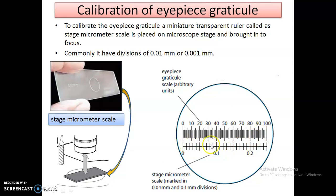From 0 to 40 on the eyepiece graticule should correspond to 0.1 mm on the stage micrometer. From 40 to 80 should correspond to 0.2 mm, and from 80 to 100 should correspond to 0.05 mm — combining all these gives a total of 0.25 mm. During calibration, 0.1 mm should always align with division 40, 0.2 mm with division 80, and the last value with division 100. If these values do not align correctly, the eyepiece graticule is not properly calibrated.